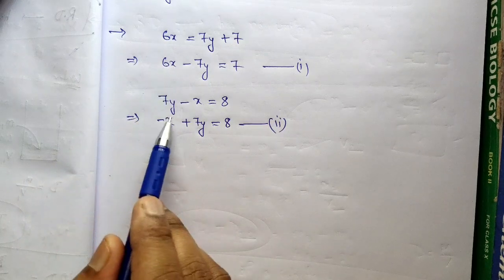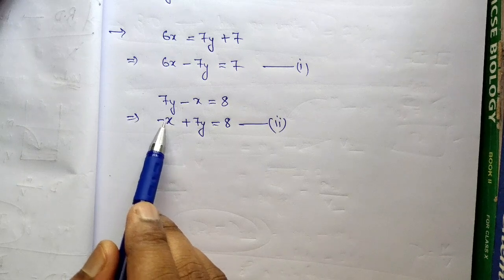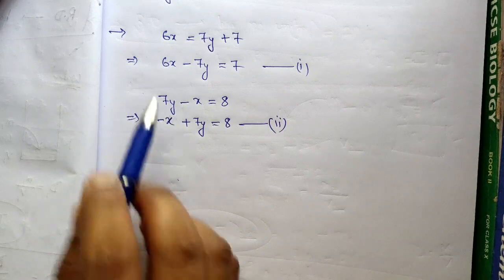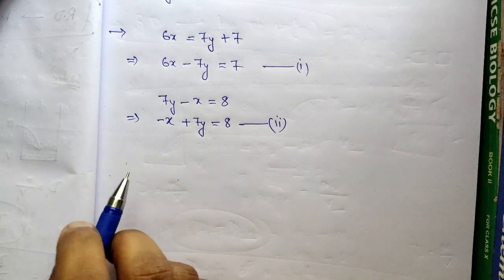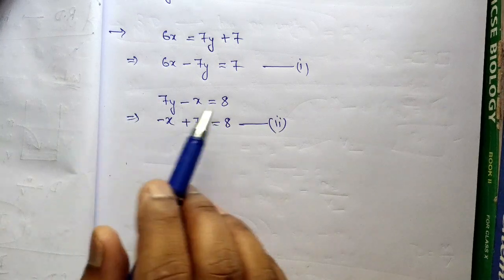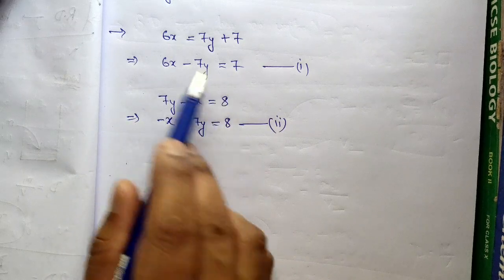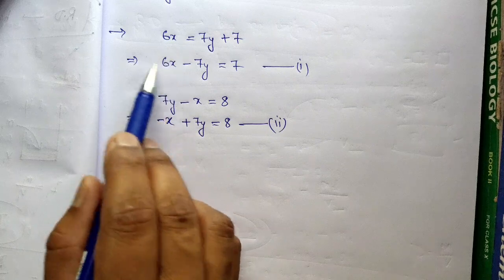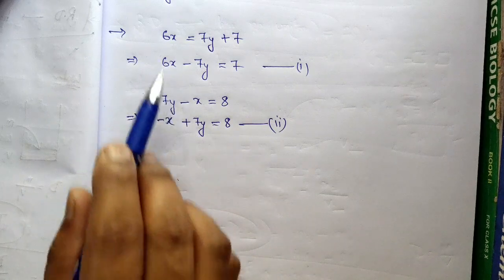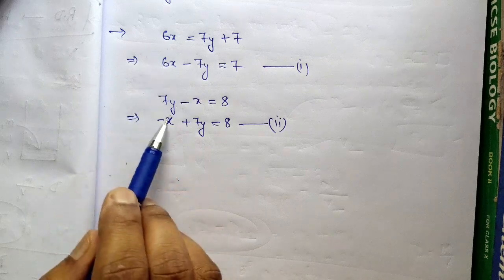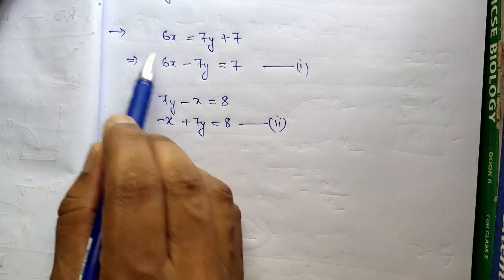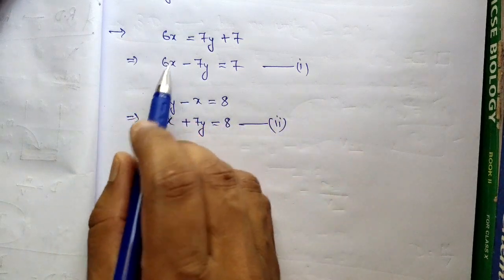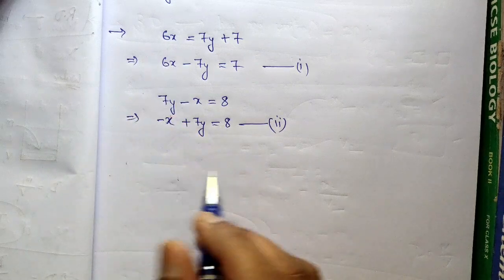What is the coefficient of X in Equation 1? It's 6. And in Equation 2? It's minus 1 — but ignore the sign for now, so just 1. You need to make the coefficients equal in both equations. To do that, find the LCM of 6 and 1, which is 6. Whatever LCM you get, multiply each equation by a suitable number to convert its coefficient to that LCM.